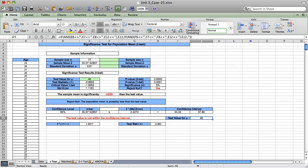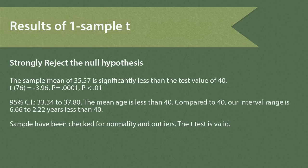Compared to 40, the entire range is below that test value of 40 years. Stating our results formally, we strongly reject the null hypothesis that mu equals 40. The degrees of freedom for a one-sample T are simply n minus 1. T for 76 degrees of freedom is a very strong 3.96, which is highly significant. Comparing our confidence interval to the test value of 40, our interval range is somewhere from 6.66 to 2.22 years less than 40, obtained by taking the confidence limits and subtracting 40 from each.